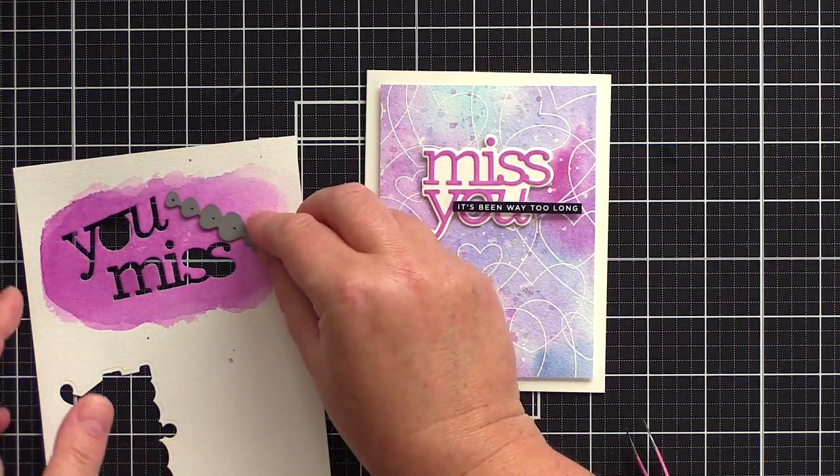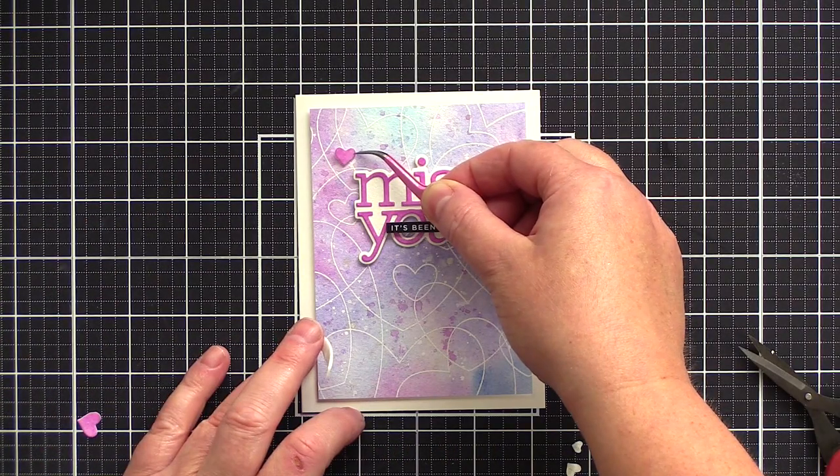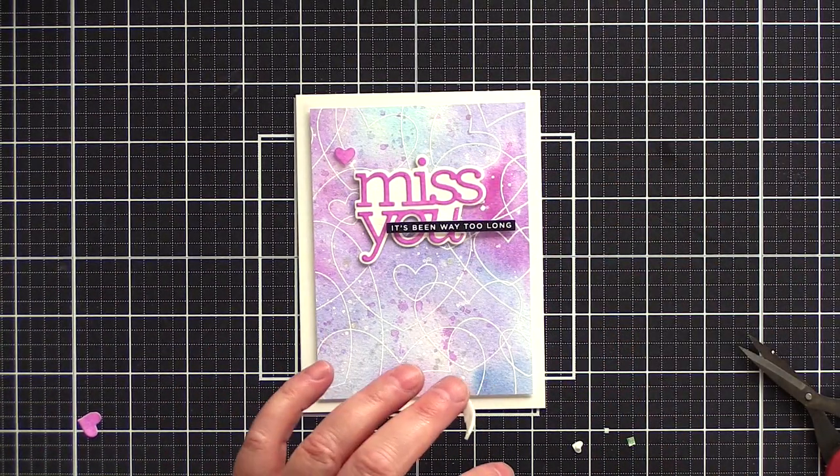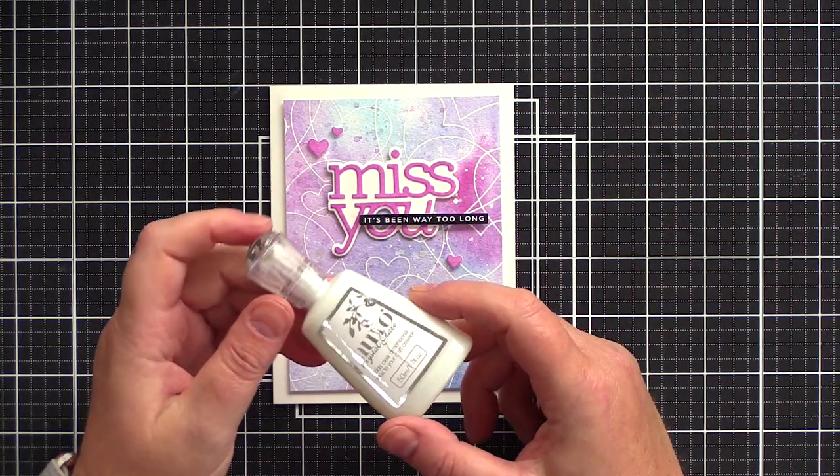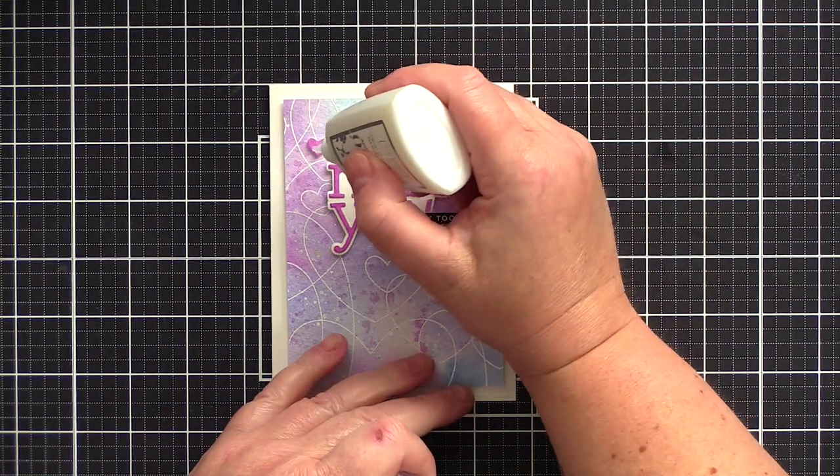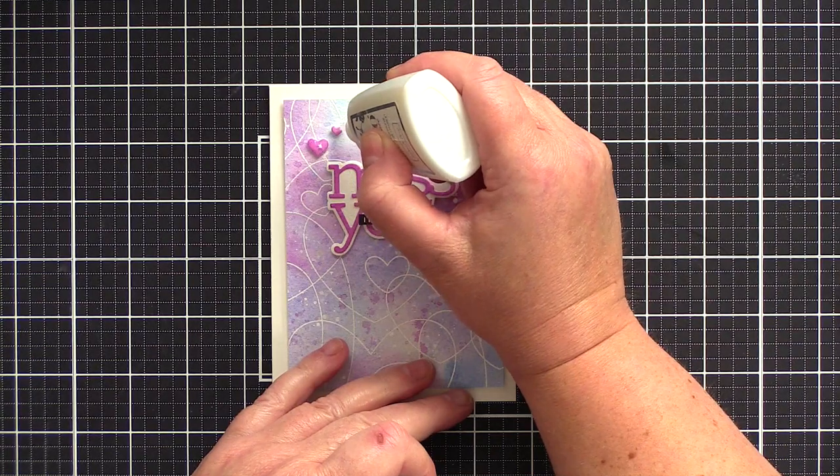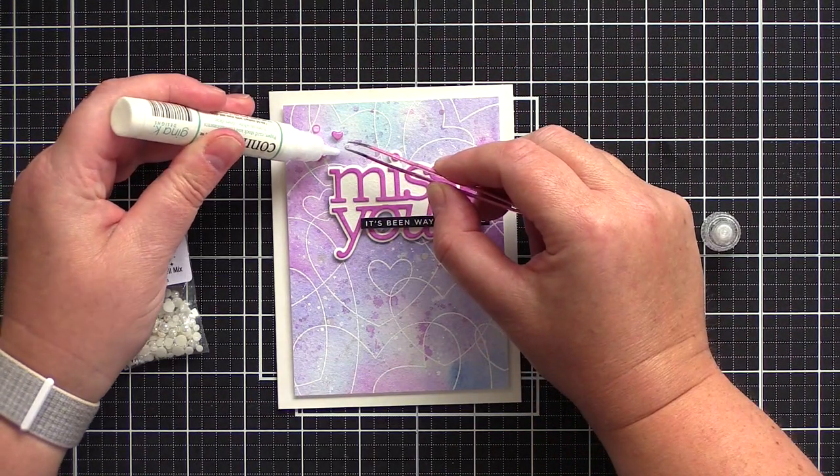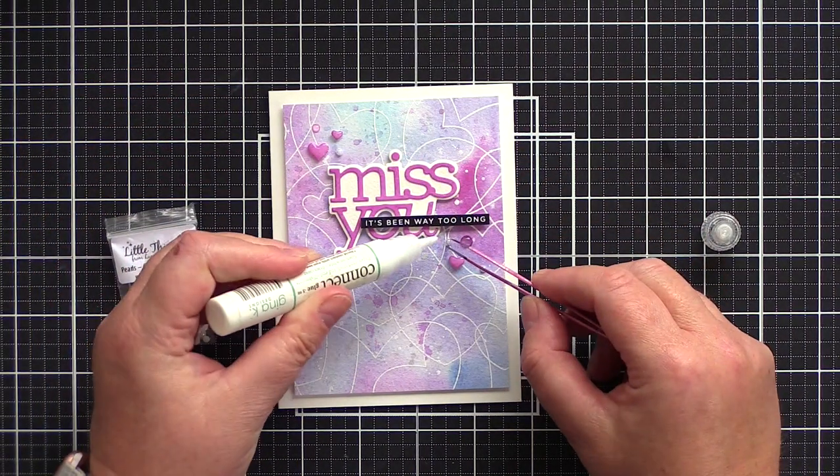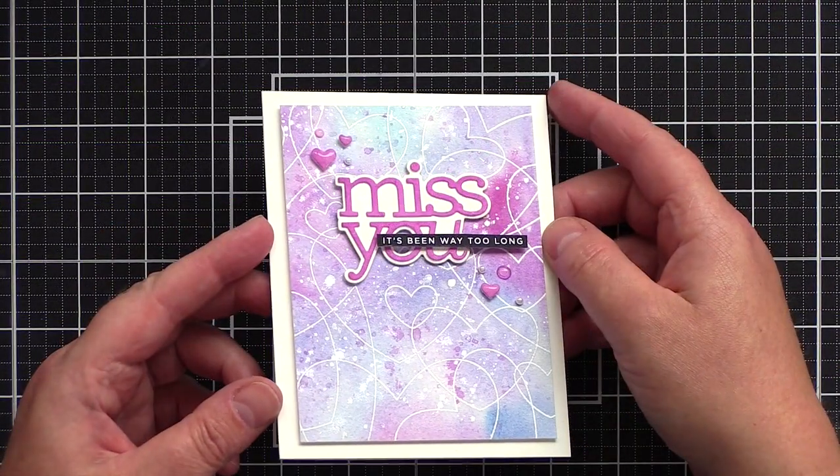I added foam adhesive to the back of the panel and adhered it to the card base and then in turn added the Miss You dies and coordinating sentiment. I die cut a few hearts from the leftover watercolor card using the holiday shapes dies from Simon Says Stamp and adhered these with foam adhesive before taking them up a notch with a coating of Nuvo Crystal Glaze to give them a lovely shine.